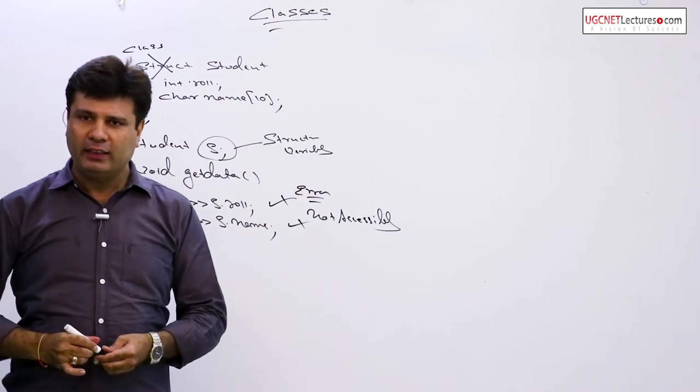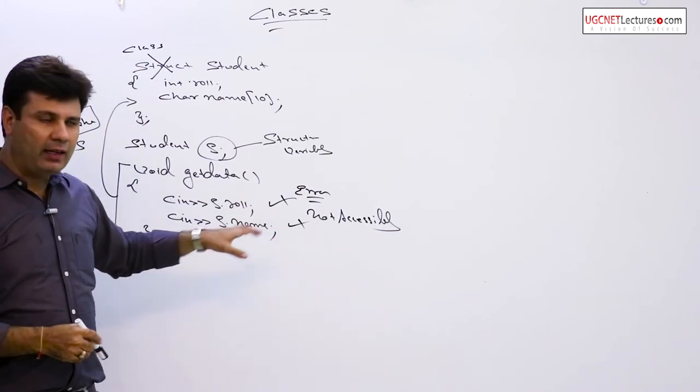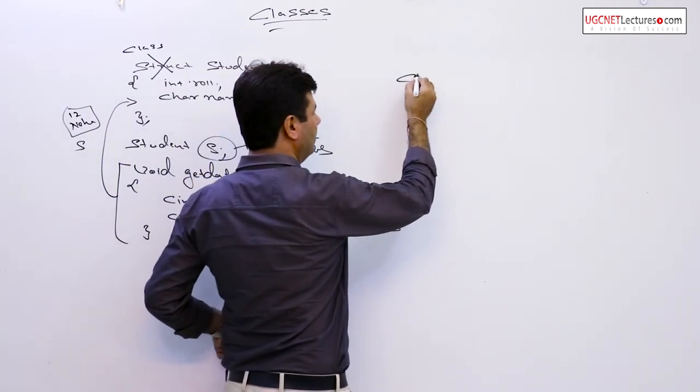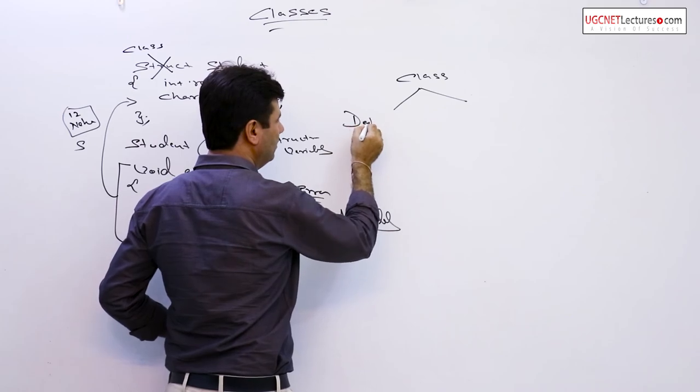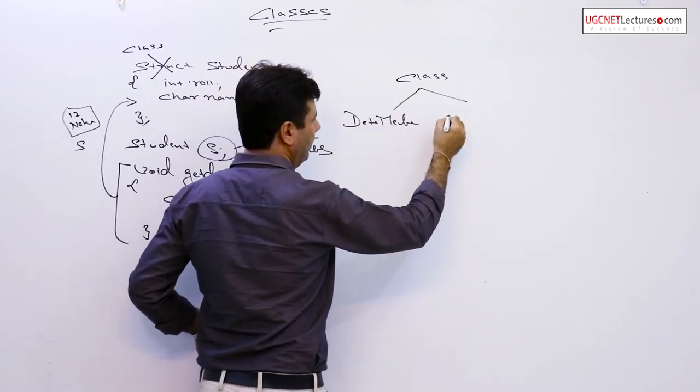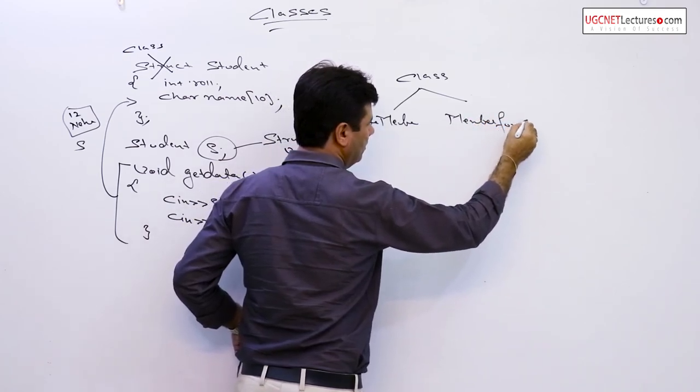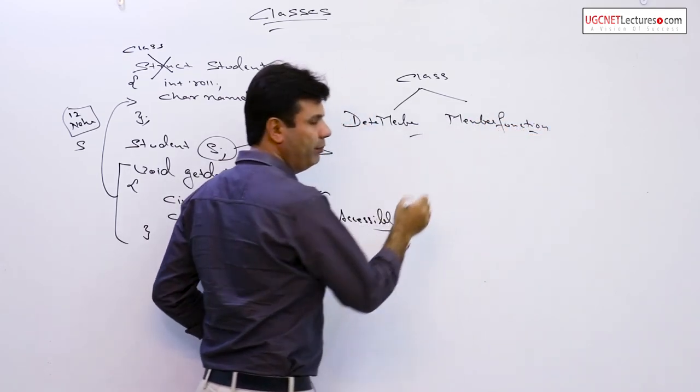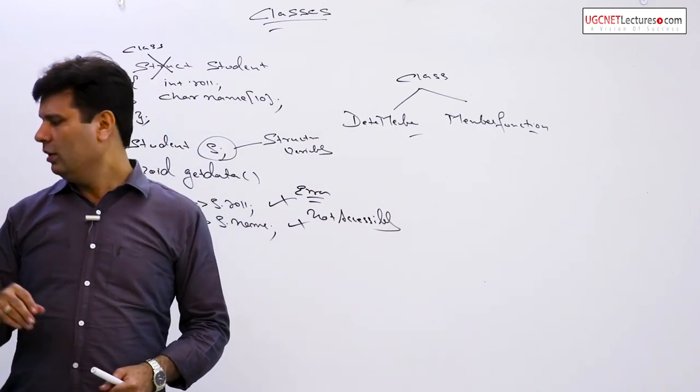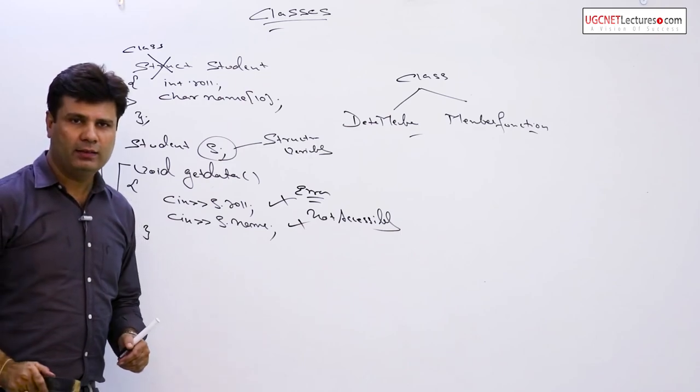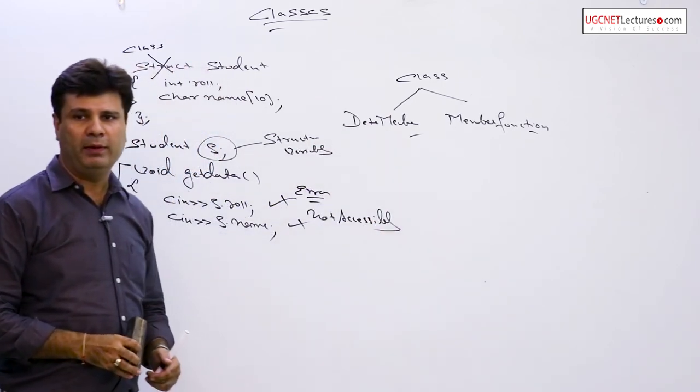The moment I define it within a class, it will become a member function. Then I would say class is a group of two things: data member and member function, where structure is only the group of elements. So let me make the class, so that we can see how the things can be achieved, how the things can be implemented in C++.